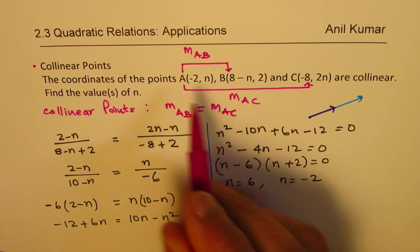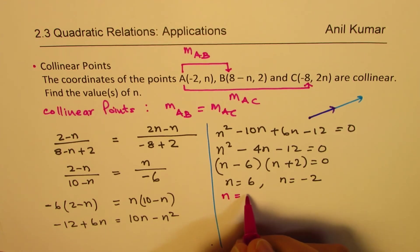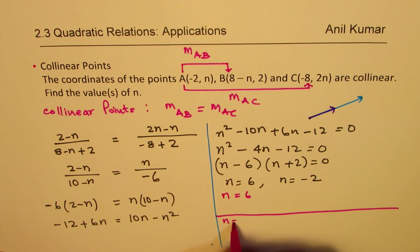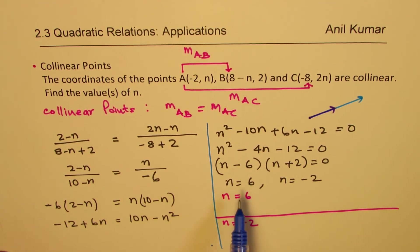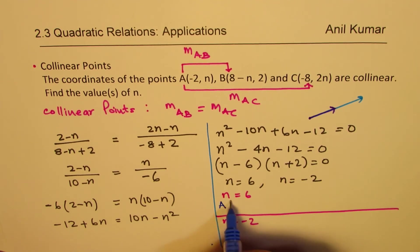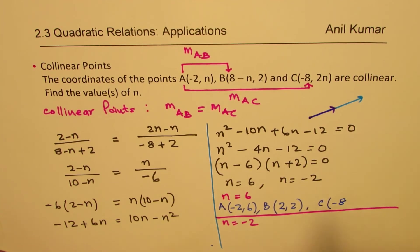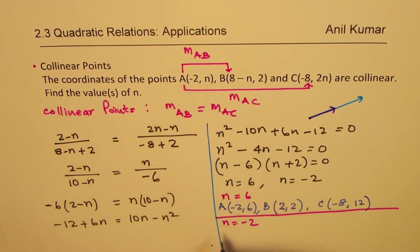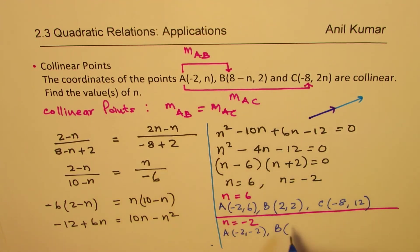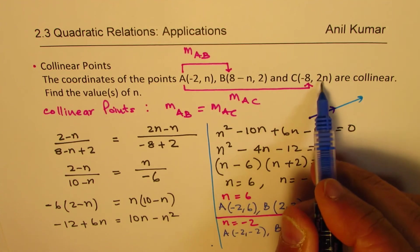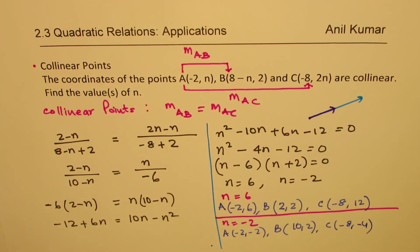There are two solutions. When N = 6: A(−2, 6), B(2, 2), C(−8, 12). When N = −2: A(−2, −2), B(10, 2), C(−8, −4). These are the two sets of collinear points.